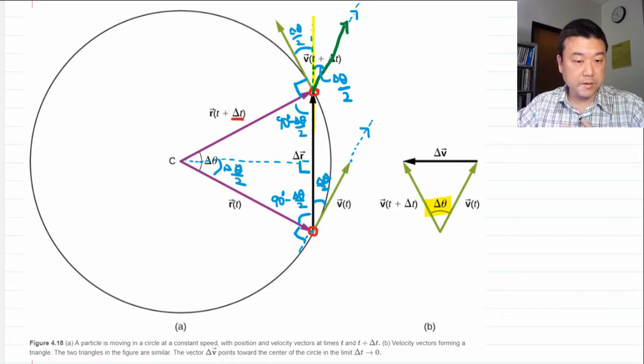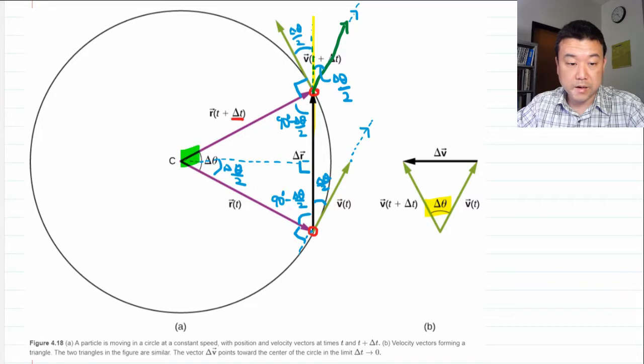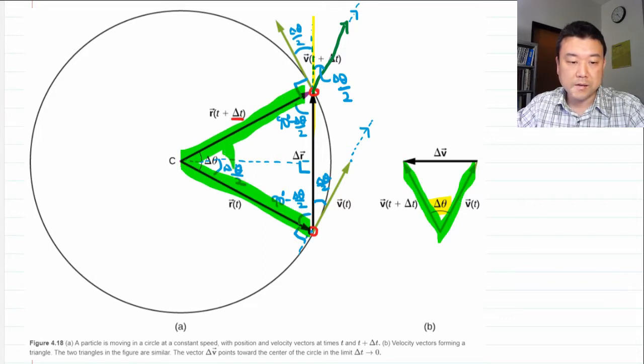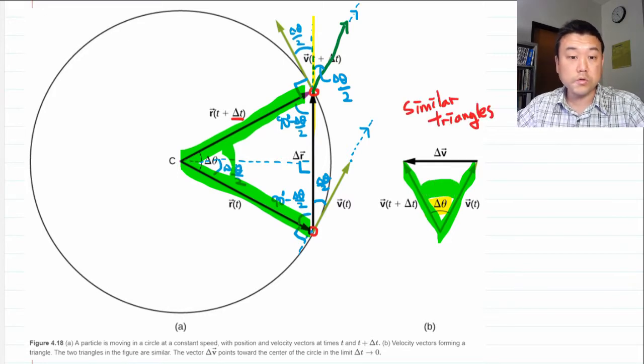Now, here's a fun thing. These two triangles are both isosceles triangles with the same angle between them, delta theta. So they are similar triangles. So you can use methods of geometry to figure out what delta V should be by relating it to delta R.